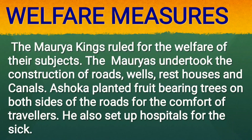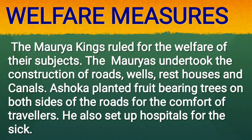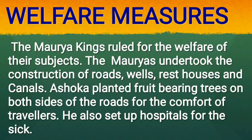Welfare Measures: The Maurya kings ruled for the welfare of their subjects. As advised by Chanakya in the Arthashastra, the king followed this principle: 'Whatever pleases the king, he shall not consider as good; but whatever pleases his subjects, he shall consider as good.' The Mauryas undertook the construction of roads, wells, rest houses and canals. Ashoka planted fruit-bearing trees on both sides of the roads for the comfort of travelers. He also set up hospitals for the sick.